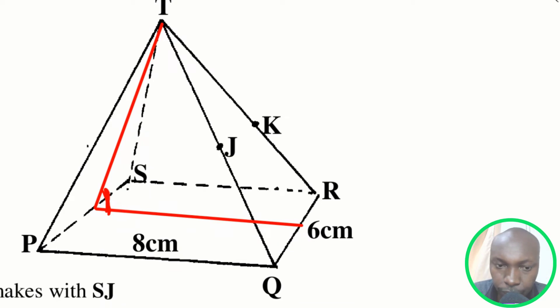So this is the angle that you require to get the angle between PTS and the base PQRS. For us now to get that angle, since we obtained the height of this pyramid, we got it and the height is point O.